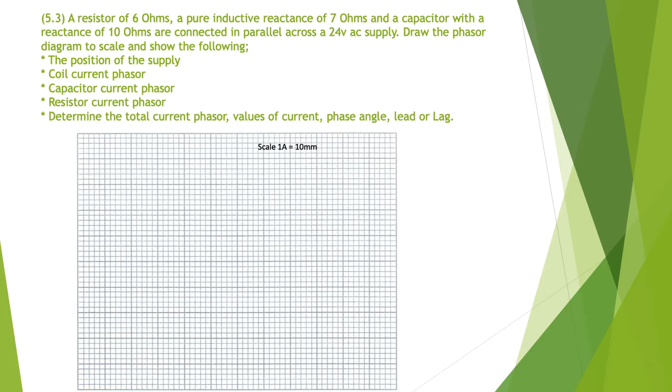The next one we've got 5.3. We have a resistor of 6 ohms, a pure inductive reactance of 7 ohms, and a capacitor with a reactance of 10 ohms connected in parallel across a 24 volt AC supply. Draw the phasor diagram to scale and show the following: the position of the supply, the coil current phasor, the capacitor current phasor, the resistor current phasor, and determine the total current, the value of the current, and the phase angle, and is it lead or lag.